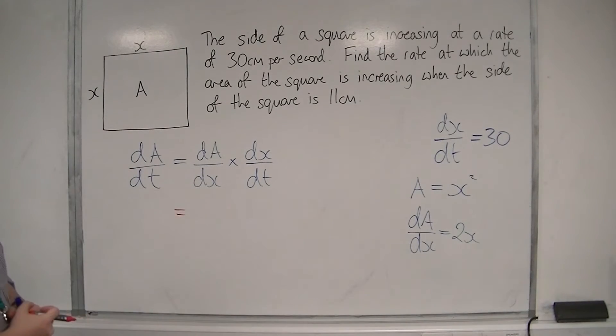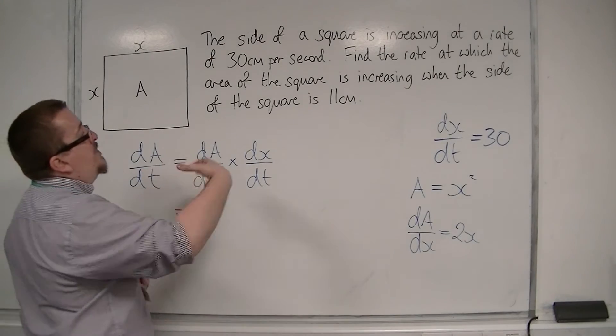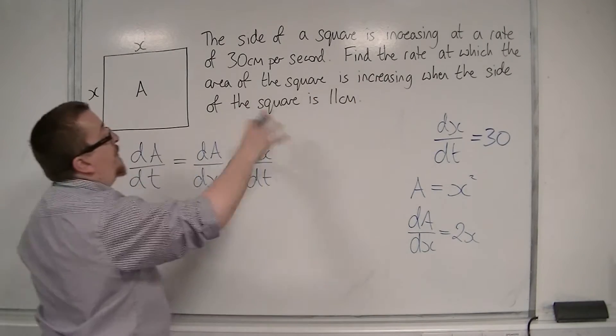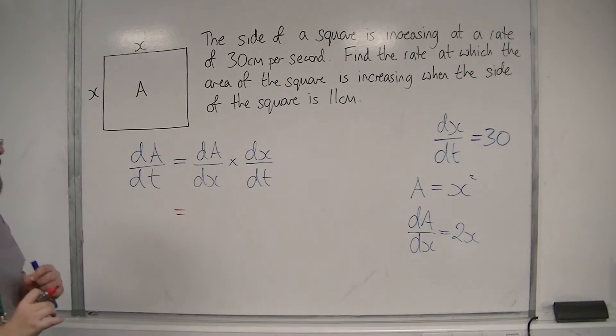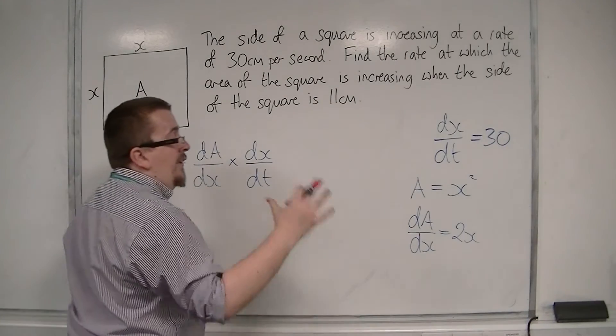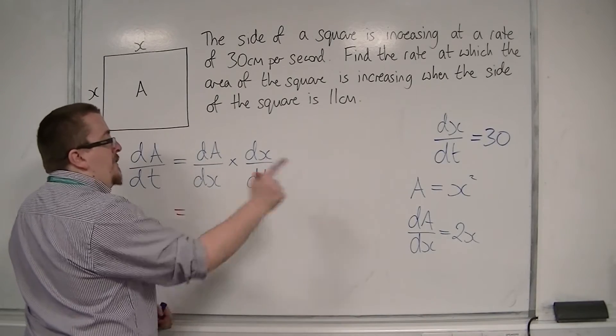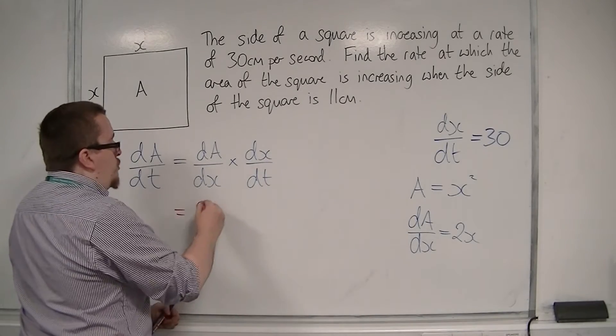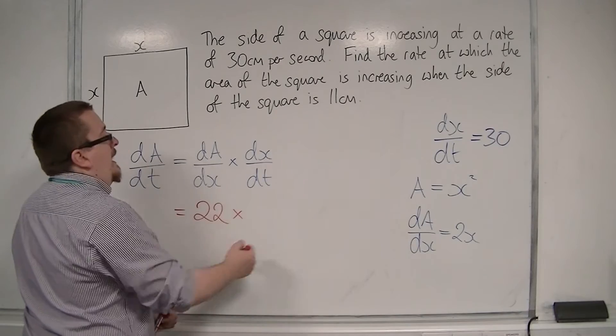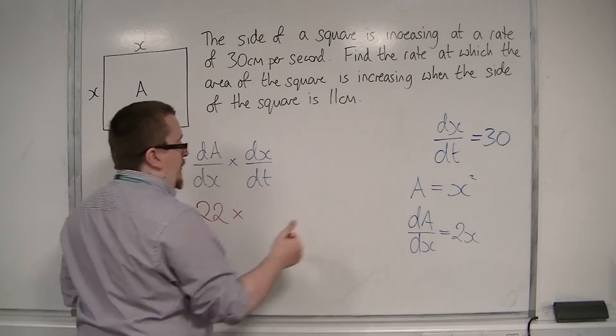So if we're looking at the rate at which the area of the square is increasing when the side of the square is 11 centimetres, that's when x is 11. So dA by dx, when x is 11, is 2 times 11, so 22. And dx by dt was 30.